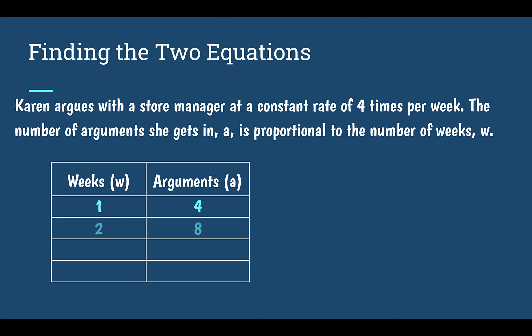If two weeks passed, she would be in eight arguments. Well, what if we don't know how many weeks, but we want to know how many arguments she would have been in after that many weeks? If I have W weeks, in order to figure out how many arguments she's been in, we would multiply the weeks by four. So I would say four times weeks, four W.